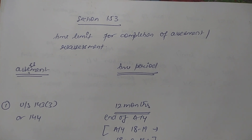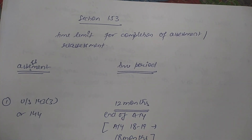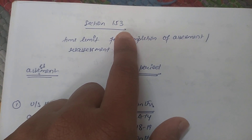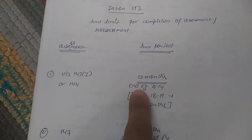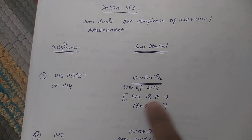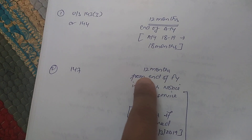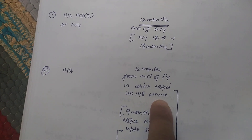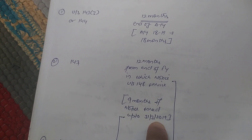Now let's move to Section 153, which deals with the time limit for completion of assessment or reassessment. When the AO issues notice for assessment or reassessment, there are time limits to complete that assessment. For assessment under Sections 143 and 144, the time limit is 12 months from the end of the assessment year. But if the assessment is for AY 2018-19, the time limit is 18 months.